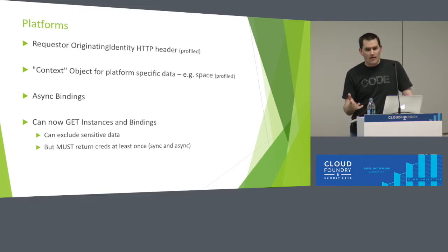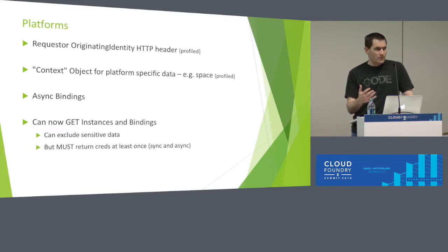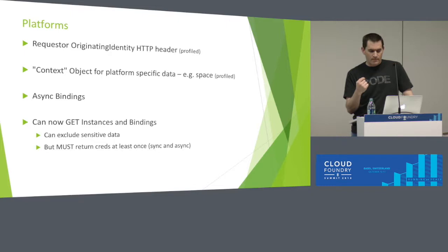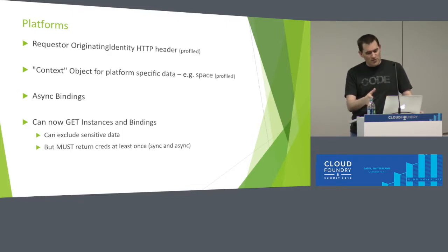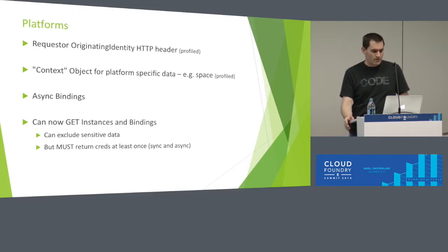We added async bindings. The API already had async create for instances, but creating bindings in some brokers can also take quite a long time. We realized we had a missing piece in the spec, so we added support for async bindings. Nothing too exciting, but it provides that optional flexibility and symmetry for people.